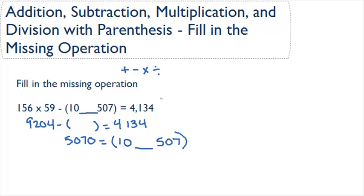Which operation should we fill in here? We need to get 5,070 from 10 plus, minus, times, or divided by 507. Now, plus, minus, and divided by will all be much too small to be 5,070.